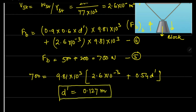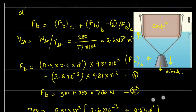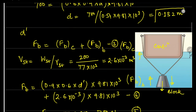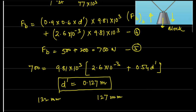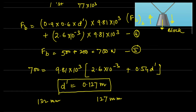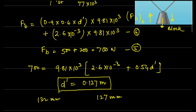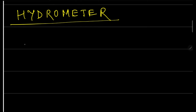Comparing the two answers: in case one, the submergence was 0.132 m (132 mm), and in case two it is 0.127 m (127 mm). We conclude that the container floats higher in the water when the block is suspended below, because the block's own buoyancy reduces the force needed to support it. An important point: the answer is independent of the depth at which the block is placed — any submergence depth gives the same result.